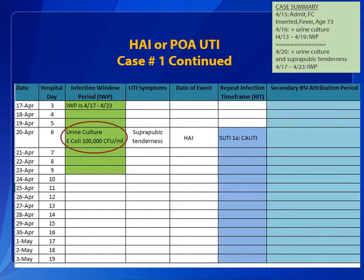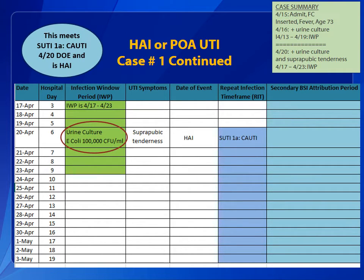The answer is yes. The E. coli positive urine culture on April 20th sets the infection window period, which is April 17th through 23rd. The catheter was first inserted on the 15th. The UTI symptom of suprapubic tenderness on April 20th meets the SUTI 1A-COTI definition. The date of event, April 20th, is in the infection window period. The RIT is April 20th through May 3rd.